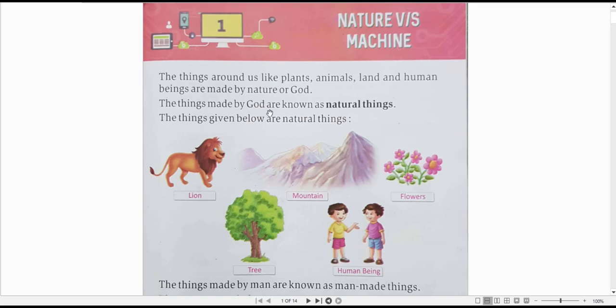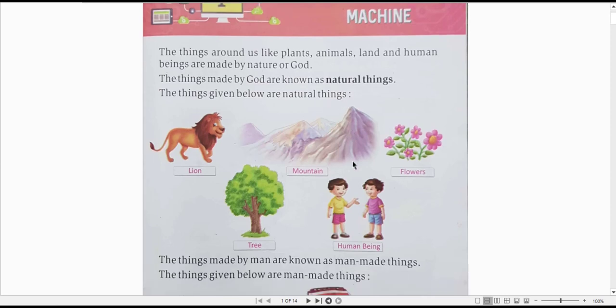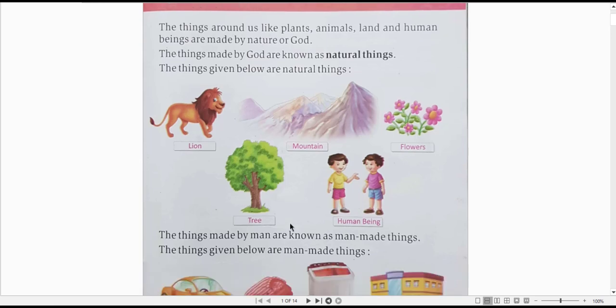The things made by God are known as natural things. If we have seen some things around us like natural things, the things given below are natural things. These are natural things: animals, mountains, rivers, flowers, human beings, trees. These are natural things.